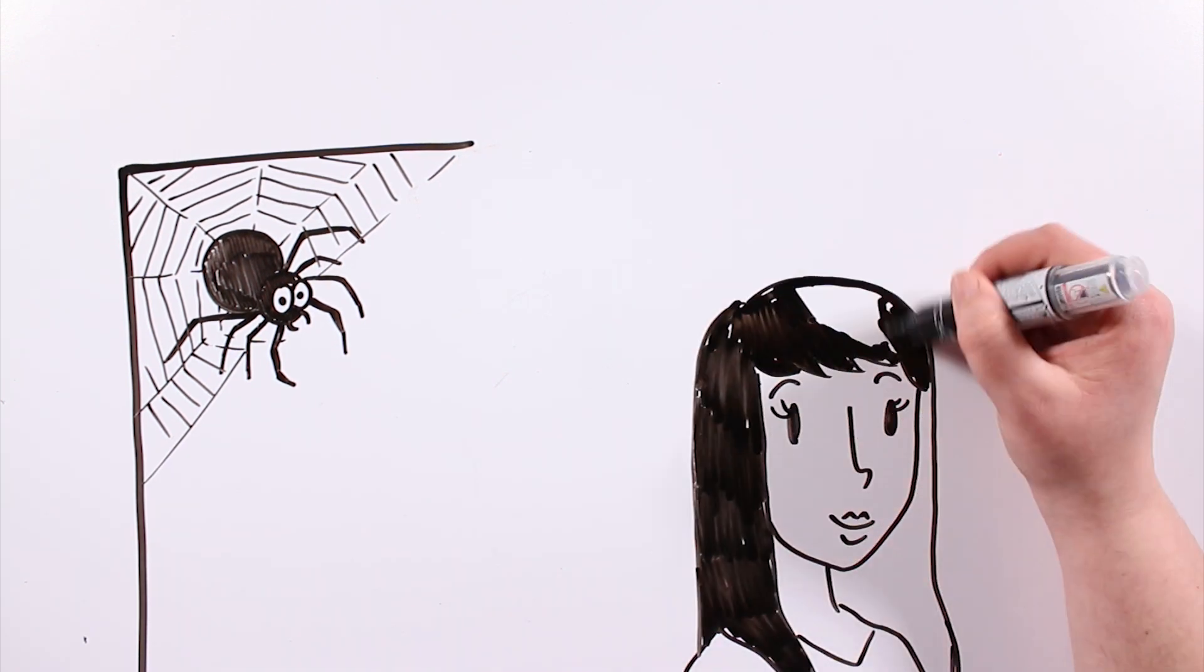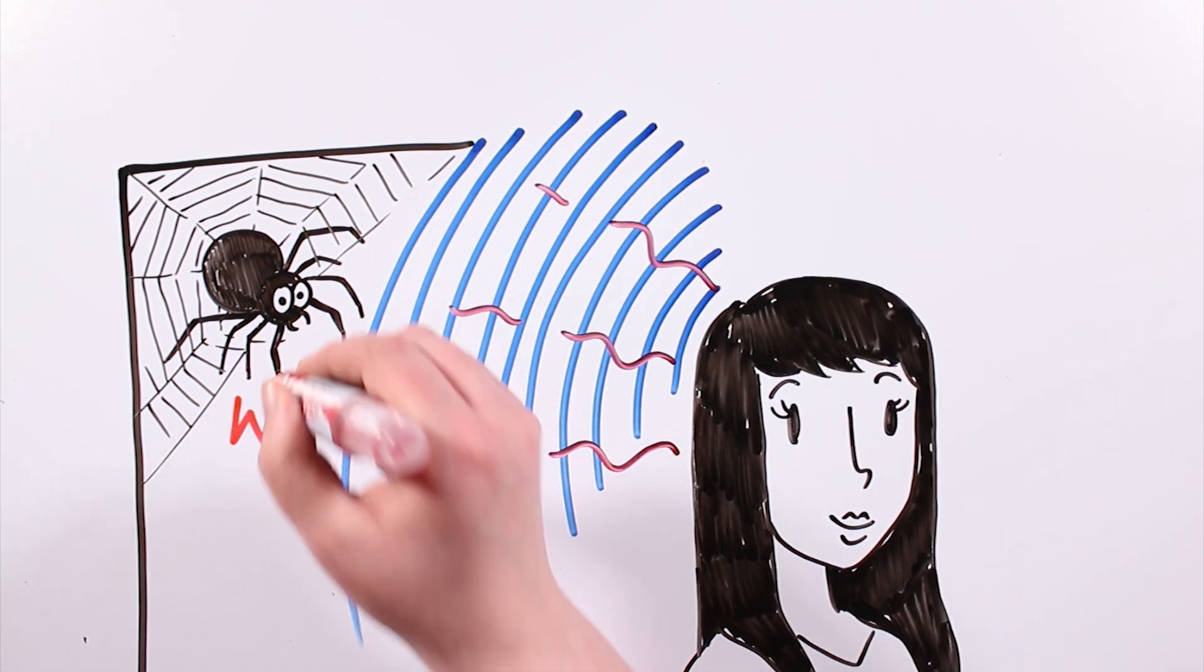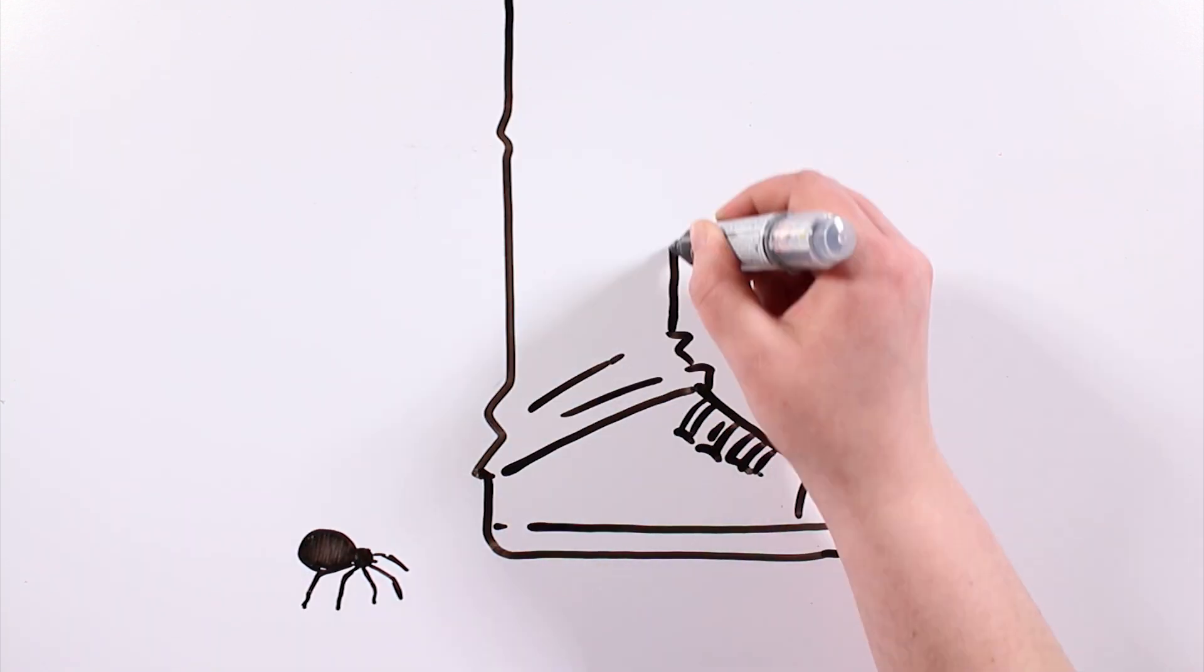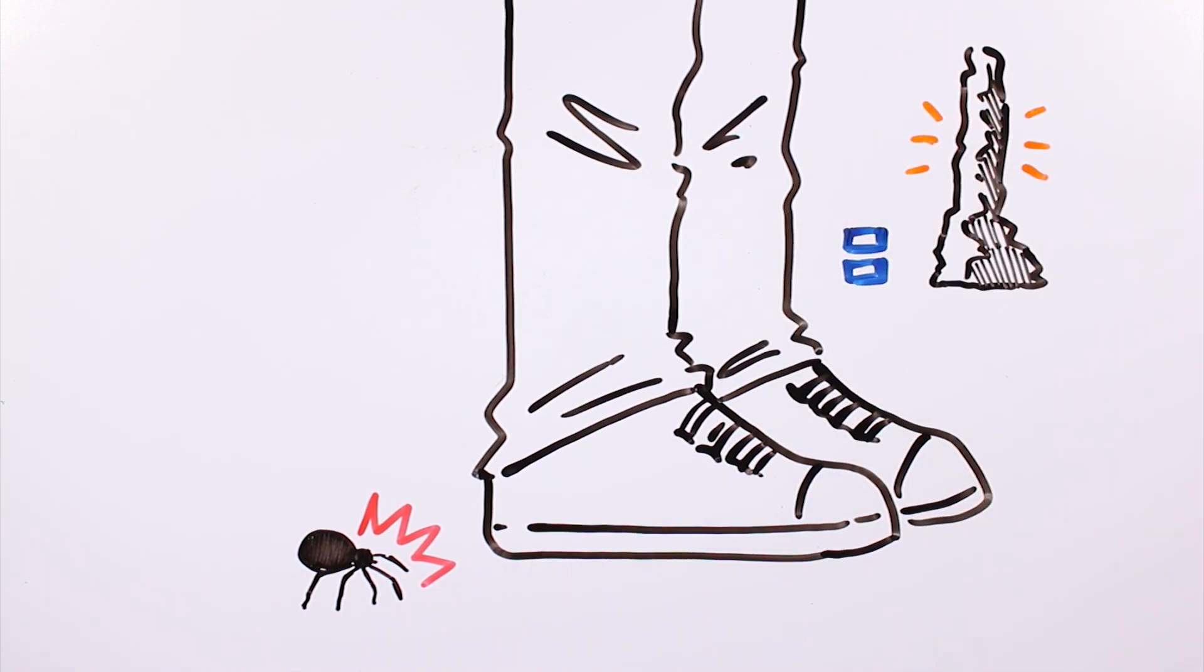Arachnids are very sensitive to vibrations and to human heat, so it's very unlikely that they will get into our mouths while we are sleeping. Researchers believe spiders see us as if we were a big rock. We are so big that we are just part of their landscape.